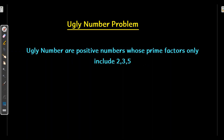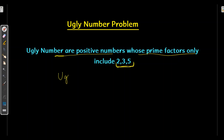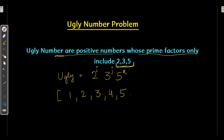So what are ugly numbers? Ugly numbers are positive numbers whose prime factors only include 2, 3, and 5. So I can say any ugly number can have 2, 3, and 5, or multiples of them. If I take the first 10 ugly numbers: 1, 2, 3, 4, 5, 6, 8, 9, 10, 12. So these are the first 10 ugly numbers.